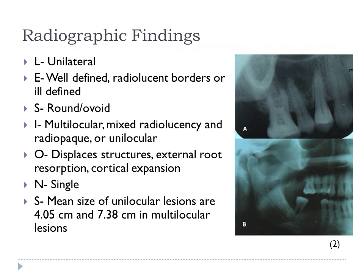These multilocular lesions will have a mix of radiolucency and radiopaque internal structures. The structural changes of the jaw can produce displacement, external root absorption, and cortical expansion. The inferior alveolar nerve canal can be displaced inferiorly when the lesions are located in the posterior body of the mandible. Picture A shows destruction of the alveolar bone apical to the maxillary right first and second premolar and distal to the maxillary right first molar, with apical loss of lamina dura of both premolars.